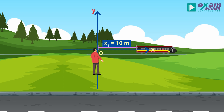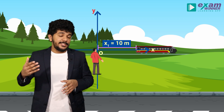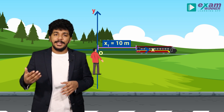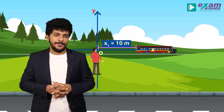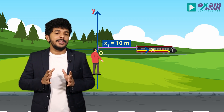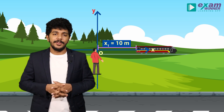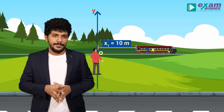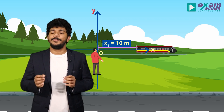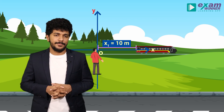We denote the initial position, which is 10 meters. We generally denote this as x1. So x1 is equal to 10 meters.